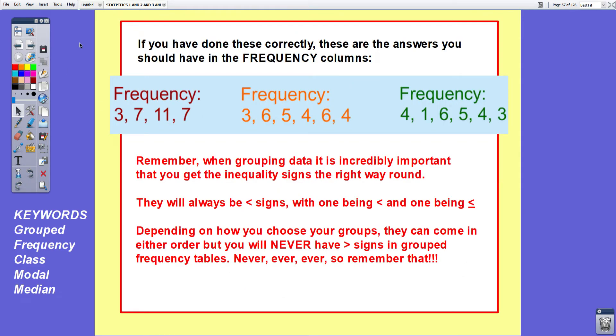If you've done these correctly, these are the answers you should have in your frequency columns. Red: 3, 7, 11, 7. Orange: 3, 6, 5, 4, 6, 4. And green: 4, 1, 6, 5, 4, 3. Now some things to remember at this point. When grouping data it's incredibly important that you get the inequality signs the right way round. They will always be less than signs, one being less than and one being less than or equals to. Depending on how you choose your groups they can come in either order. But you will never have greater than signs in grouped frequency tables. Never, ever, ever. So remember that because it's really important.